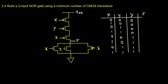You also have to know the behavior: PMOS turns ON when the input is 0 and turns OFF when the input is 1. NMOS acts exactly opposite — NMOS is ON when it's 1 and OFF when it's 0.